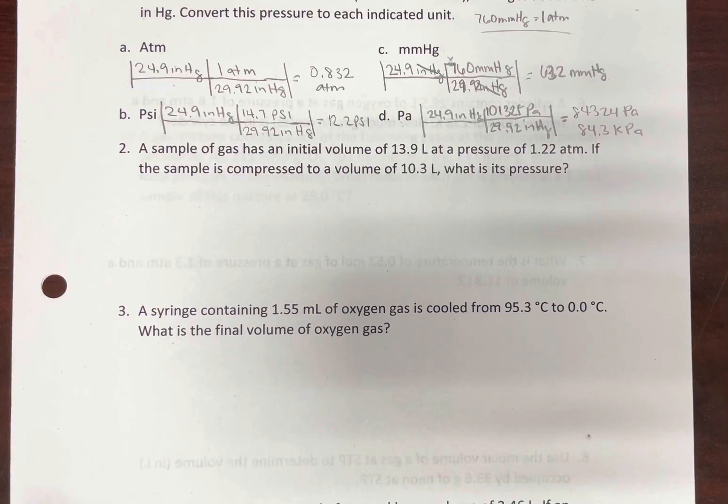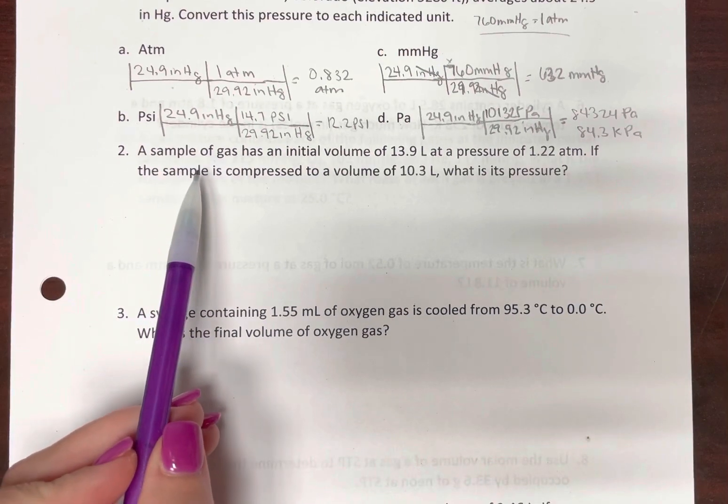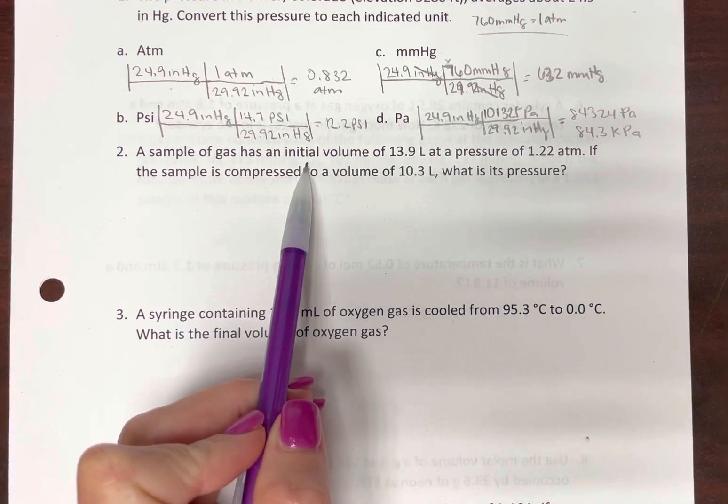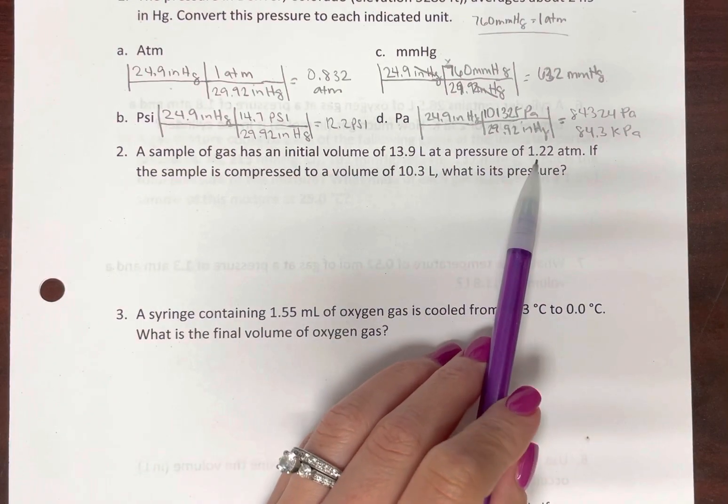Let's go through a few of these simple gas law problems. So the first one, we have a sample of gas that has an initial volume of 13.9 liters and pressure.